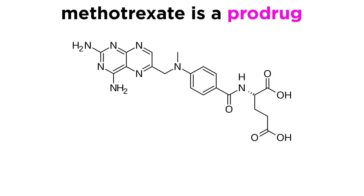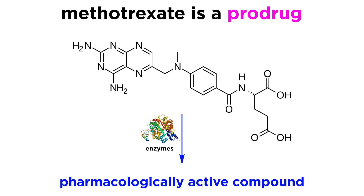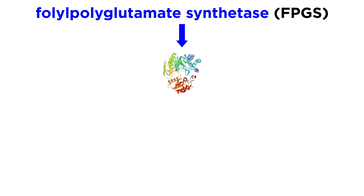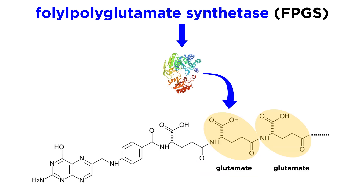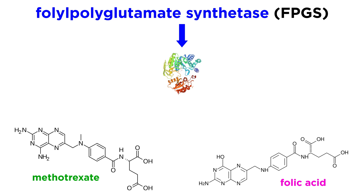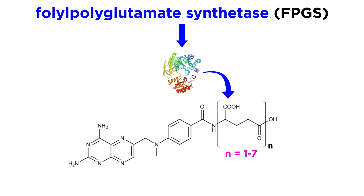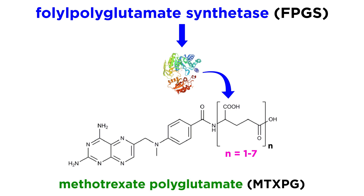Methotrexate itself is not active, but rather functions as a prodrug. This means that enzymes in the body alter methotrexate, converting it into a new, chemically unique, and pharmacologically active compound. An enzyme called folyl polyglutamate synthetase, or FPGS, functions in the regulation of the essential biologic molecule folic acid, by sequentially adding glutamate molecules to its structure. Due to the highly similar structure of methotrexate to folic acid, FPGS can also add glutamate moieties to methotrexate, generating methotrexate polyglutamate, or MTXPG.